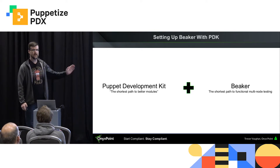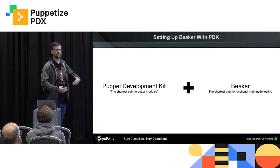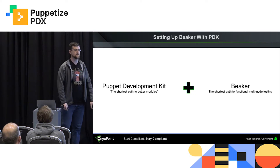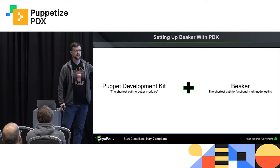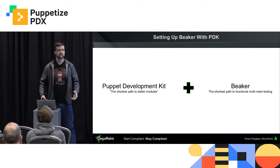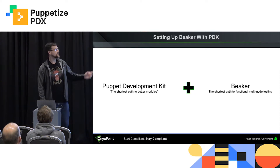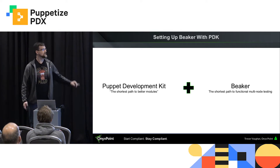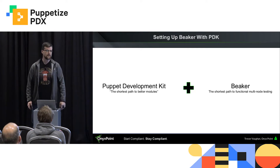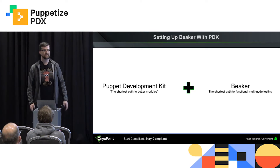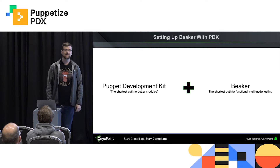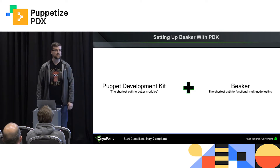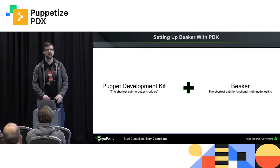PDK came out fairly recently and hit mainstream in 2018. I'm going to actually go through setting up Beaker with PDK using the modern tool sets. The Puppet Development Kit is stated as the shortest path to better modules, and I've defined Beaker as the shortest path to functional multi-node testing — and it's right now pretty much the only path unless you roll it from scratch.